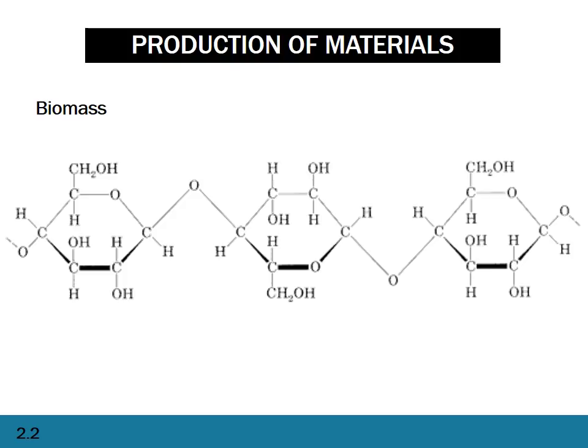Now let's move on to biomass and ethanol. You need to be able to draw cellulose — at least three glucose monomers — exactly as on the slide. The CH₂OH groups have to switch sides, and the oxygen joining the two groups should go from up to down. You just need to memorize this. The solid line bits just show in and out of the page — you don't need to know that.